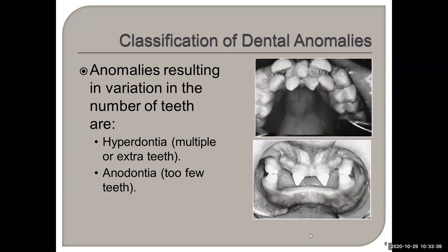Anomalies can also result in variation in the number of teeth. Hyperdontia means multiple or extra teeth, versus anodontia which means too few teeth. Anodontia refers to congenitally missing teeth — not teeth that have been removed. Partial anodontia would be, say, teeth number seven and ten never forming, or the third molars never forming. True anodontia is when no teeth have formed at all. You can see the extra teeth on top for hyperdontia and anodontia on the bottom.